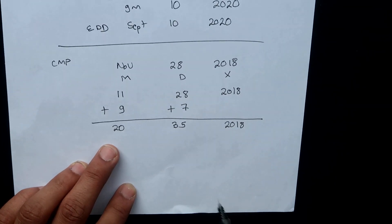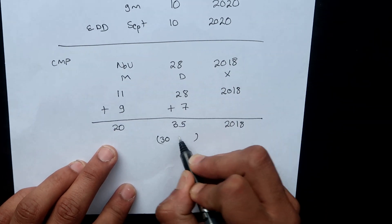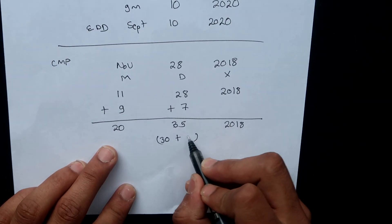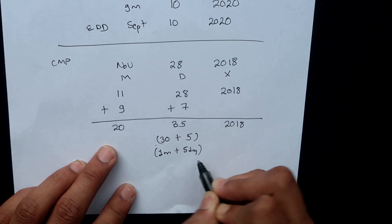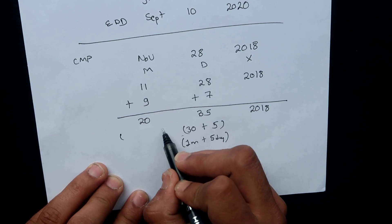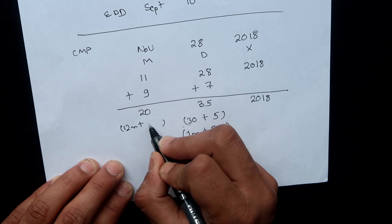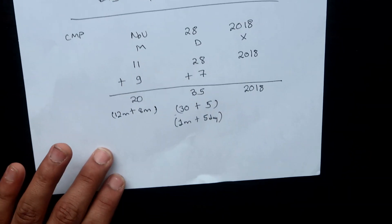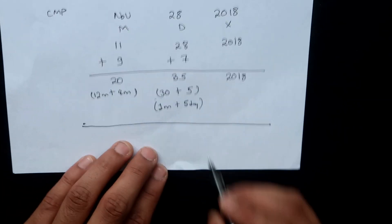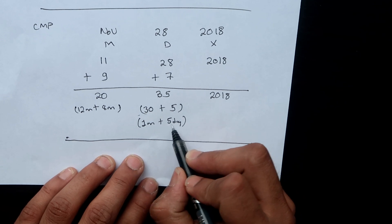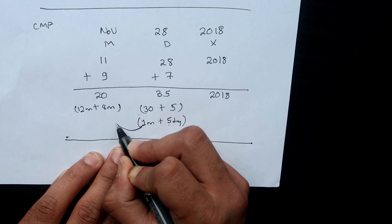Both the months and the days are in excess. Let's break down the days: 35 = 30 + 5, so 30 days = one month carry-over, with 5 days remaining. Now break down the months: 20 months — we can only have 12, with 8 months remaining. Start with the smaller unit — days. Five days stay in the day column, and the carried one month is added to the month column.